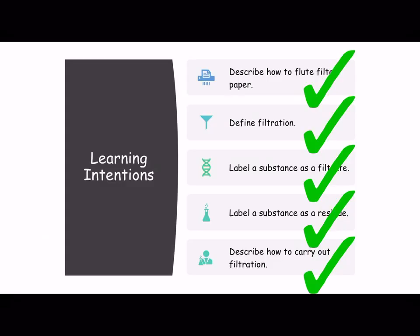So that's very simple — that's our filtration. We've talked about how to flute filter paper and defined what filtration is. Remember you need your key words: your residue, your solvent passing through, and your filtrate. We talked about filtrate and residue, and how to carry out a filtration. So that's a very brief introduction to filtration. Any questions, just let me know.